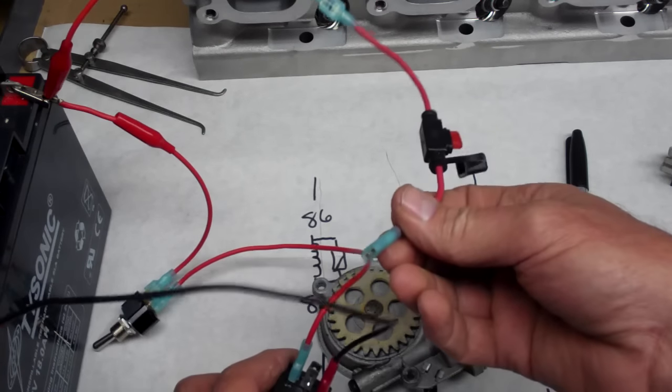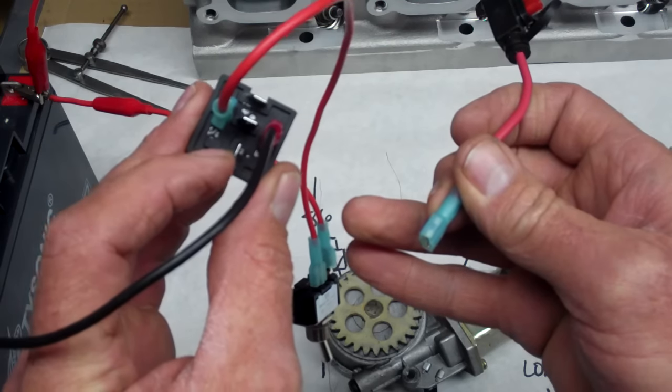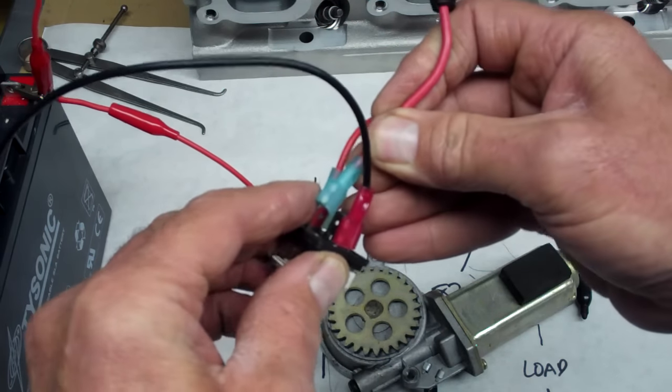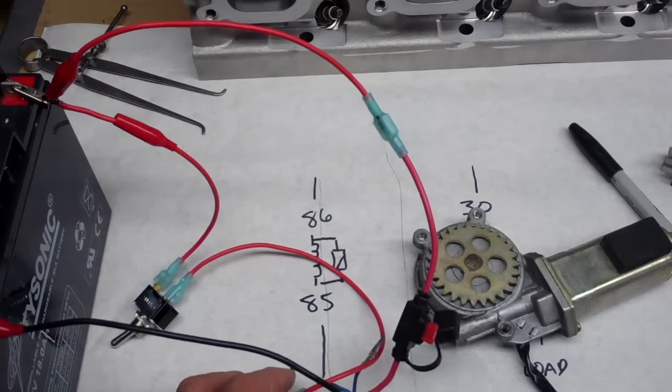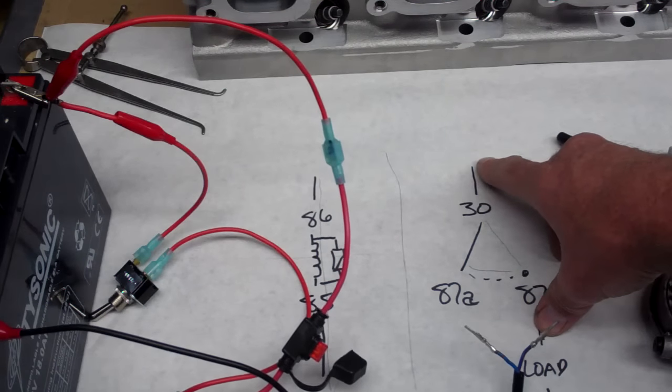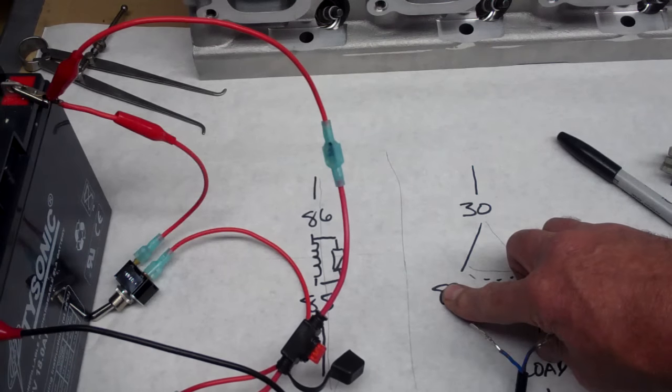Alright. Now, the load, I need my power to the load coming in on pin 30, which is this pin right here. So we're going to hook that up to 30. Then, with this particular relay, the normal position has continuity between pin 30 and pin 87A.